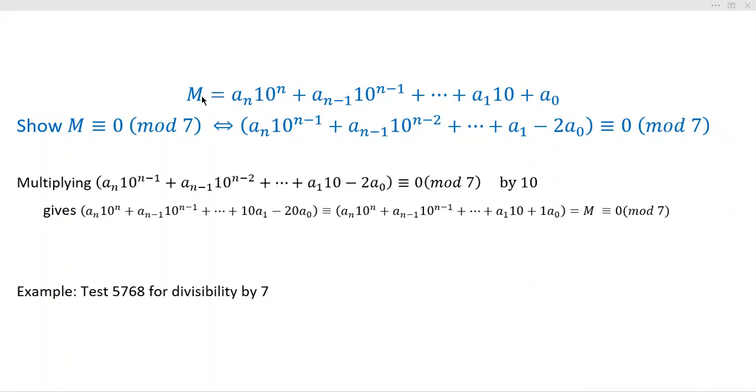Now, what I've written down here is just the standard decimal representation for the integer M. And of course, the a sub i's here are just the digits zero through nine. So this is just your decimal expansion.